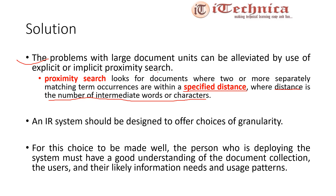One solution is to use implicit or explicit proximity search. The second solution is that an IR system should be designed to offer choices of granularity — that is, how a document should be indexed. For this choice to be made well, the person deploying the system must have a good understanding of the document collection, the users, their needs, and their usage patterns. On the basis of this information, the IR system should be deployed.